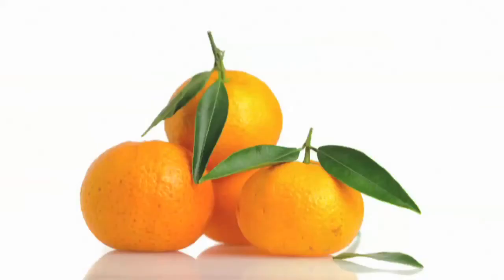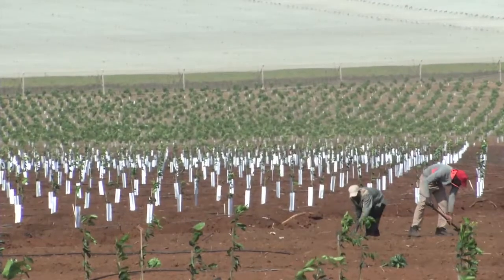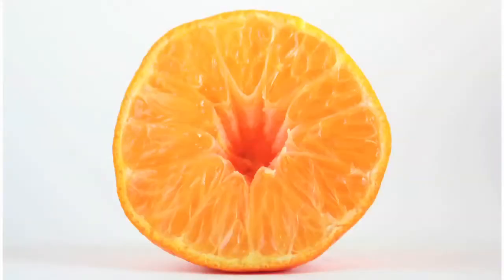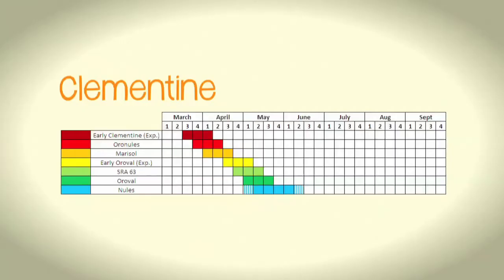Clementine is the premier soft citrus variety. The fruit is easy to peel and, if grown in exclusive blocks away from cross-pollinating varieties, they are seedless. When mature, the peel turns a lovely bright orange and the flesh has a distinctive sweet taste and flavour. The most popular Clementine cultivar is Nules, which accounts for about 75% of planted hectares. The earliest commercial Clementine cultivars mature towards the end of March, with the last one finishing around mid-June.